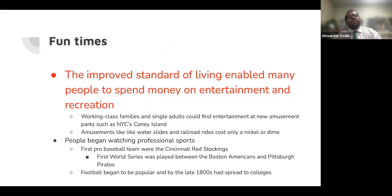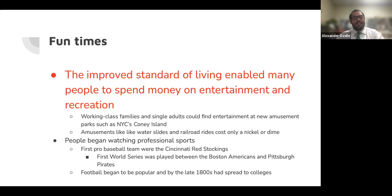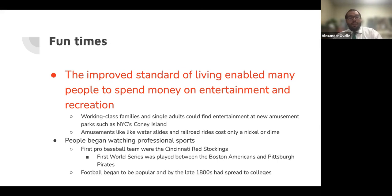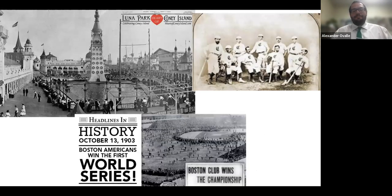The improved standard of living enabled many people to spend their money on entertainment and recreation. Working-class families and single adults could find entertainment at new amusement parks, such as New York City's Coney Island, which had amusement rides like water slides and railroad rides that only cost a nickel or a dime. People also began to watch professional sports. The first pro baseball team was the Cincinnati Red Stockings, or the Cincinnati Reds. The first World Series was played between the Boston Americans and the Pittsburgh Pirates. Football also became a popular sport by the late 1800s and soon spread to colleges.